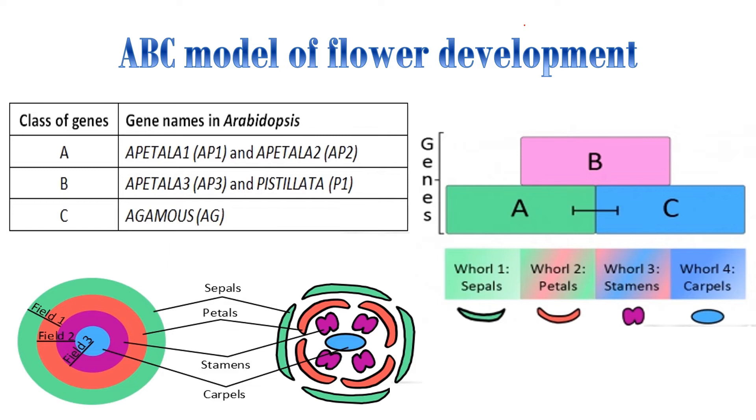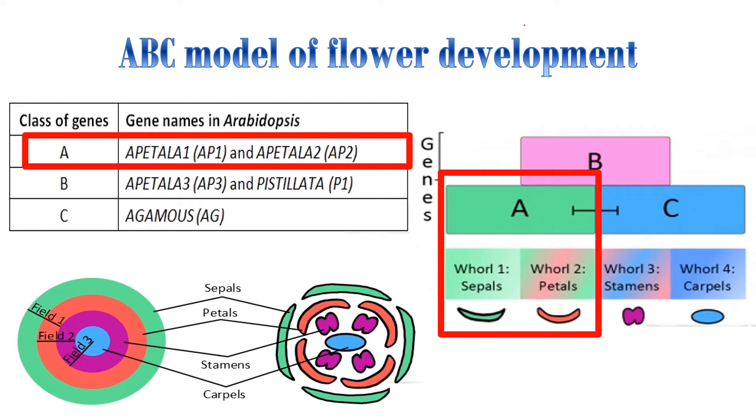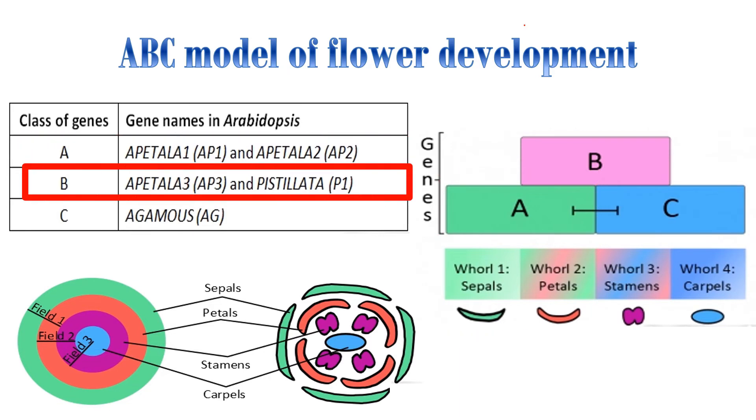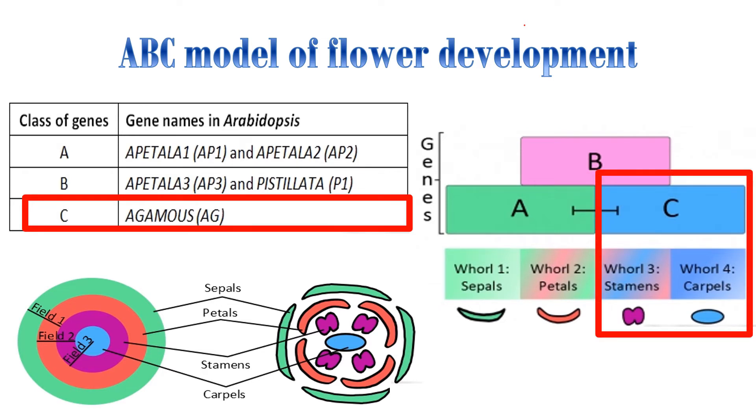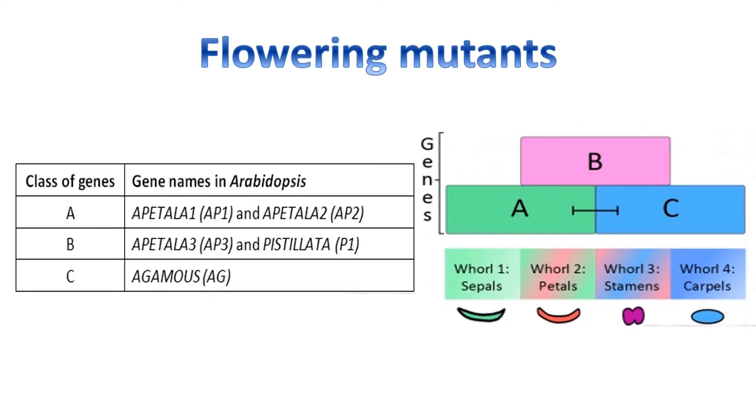The class A genes, that is APETALA1 (AP1) and APETALA2 (AP2), act to specify sepal and petal development. The class B genes, that is APETALA3 (AP3) and PISTILLATA (PI), act to specify petal and stamen development. The class C gene AGAMOUS (AG) acts to specify stamen and carpel development.